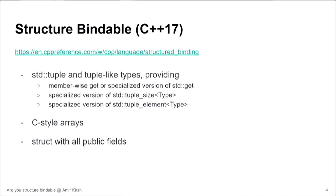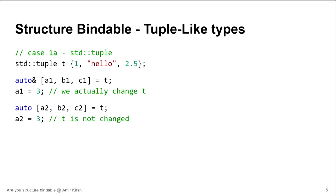In C++17 we have a new syntax, quite Pythonic, that allows us to get the values from a tuple, a pair, an array, C-style arrays, and structs with all public fields. I won't go through the cppreference page but I will show momentarily a piece of code that will remind us of this syntax.